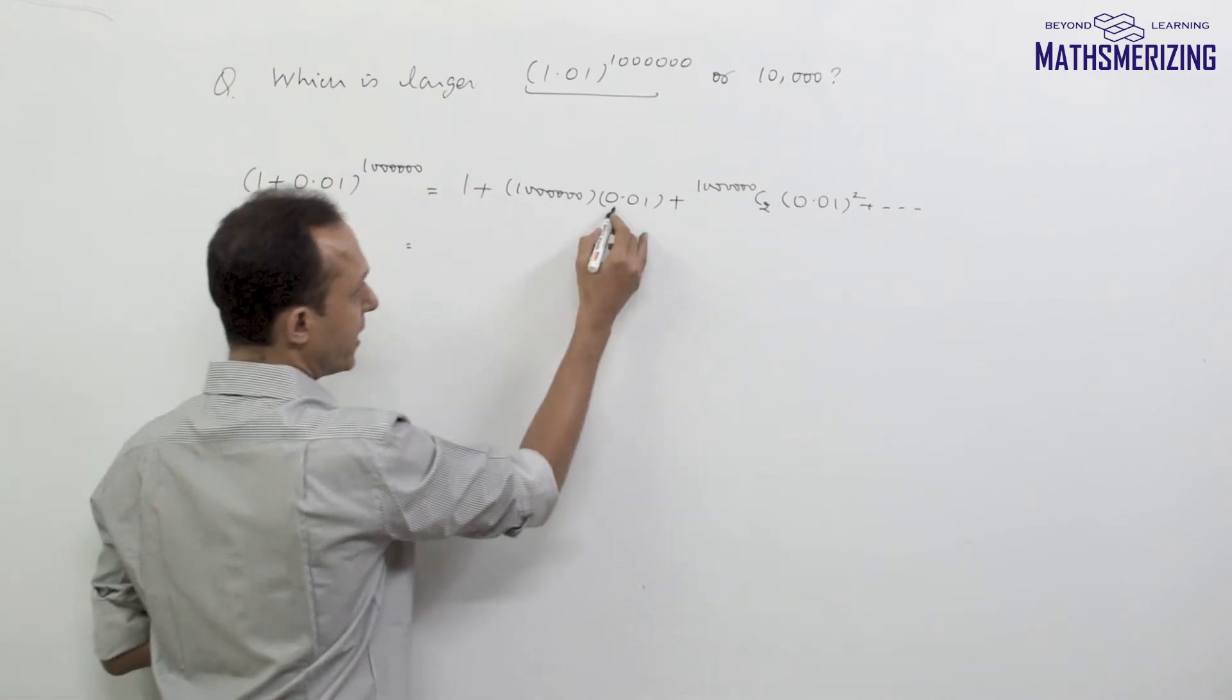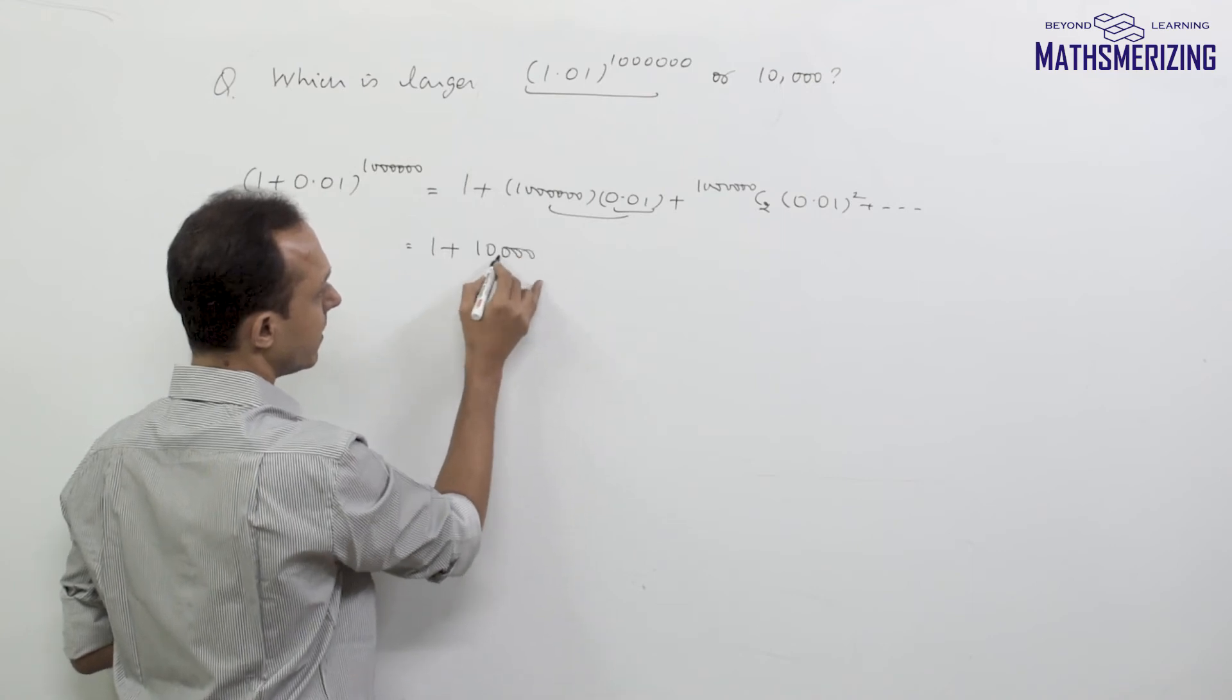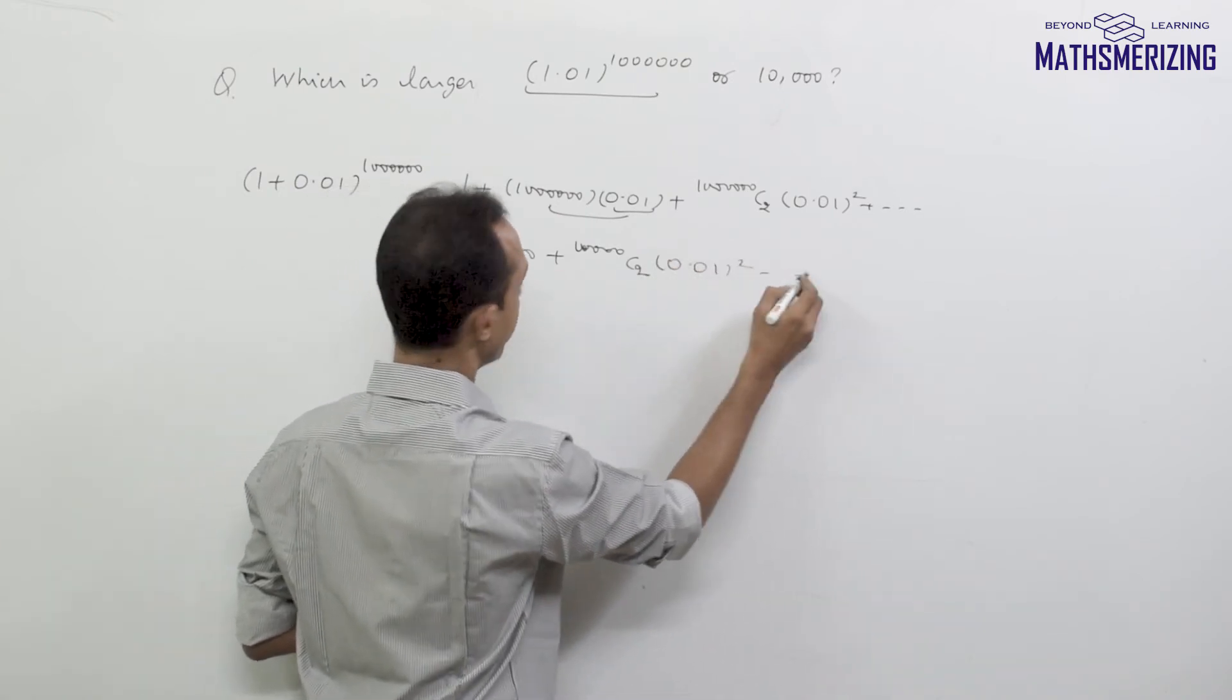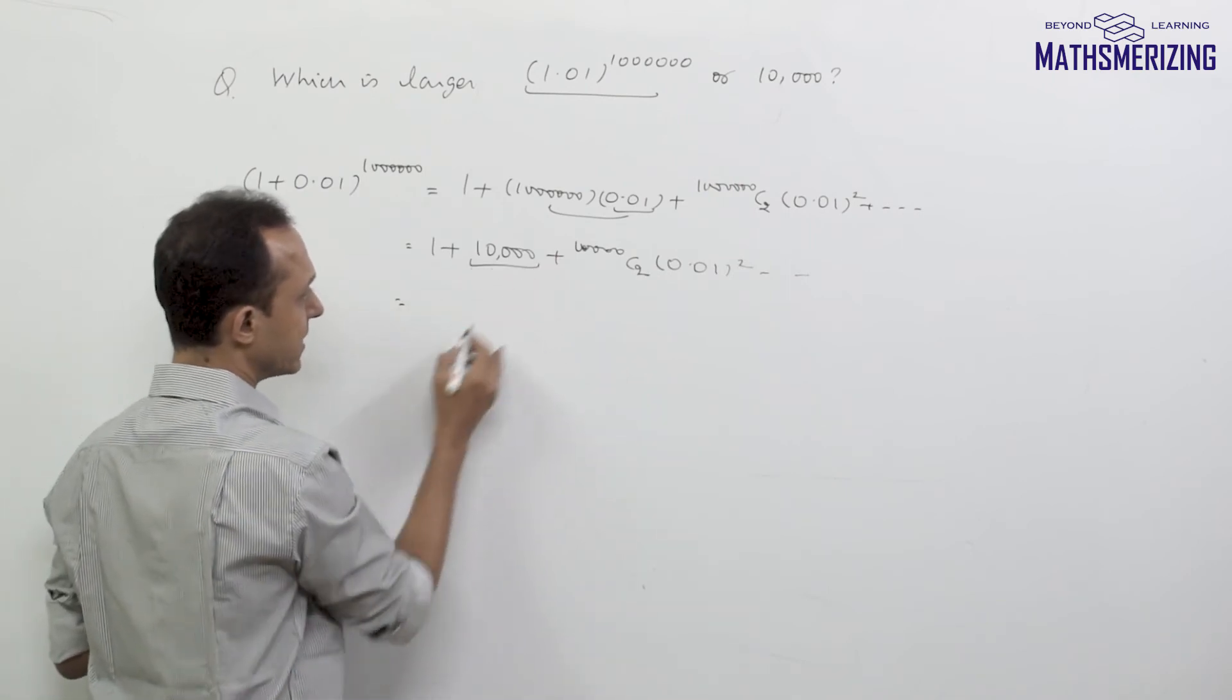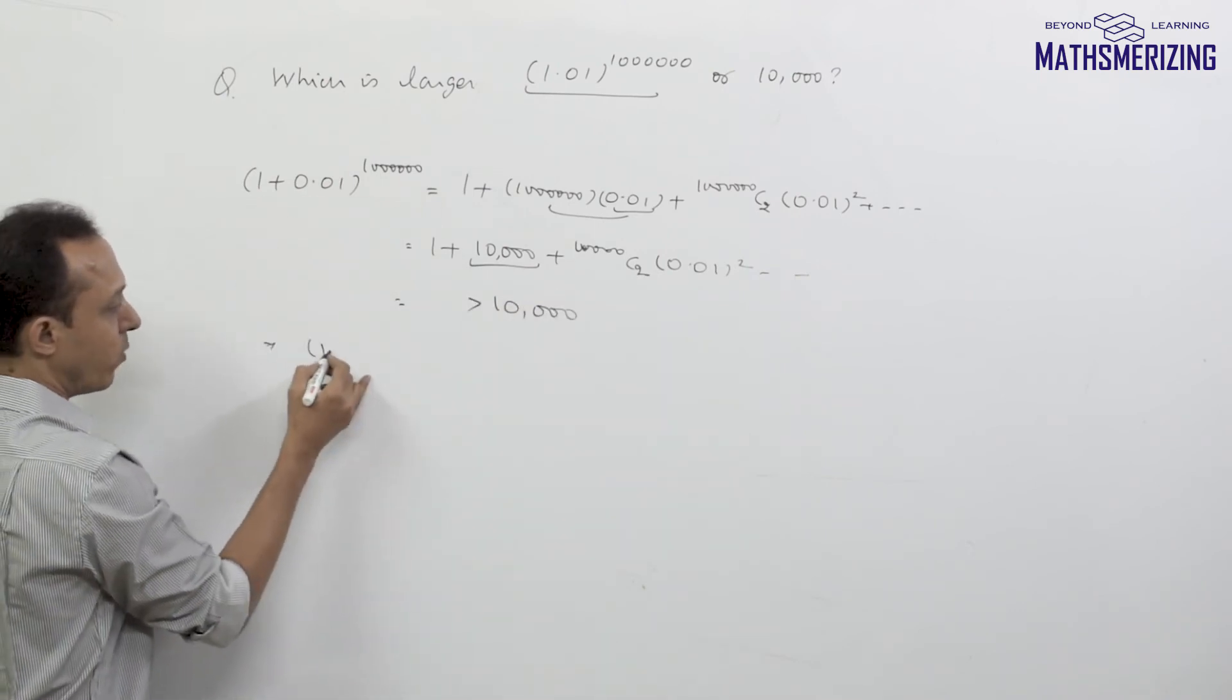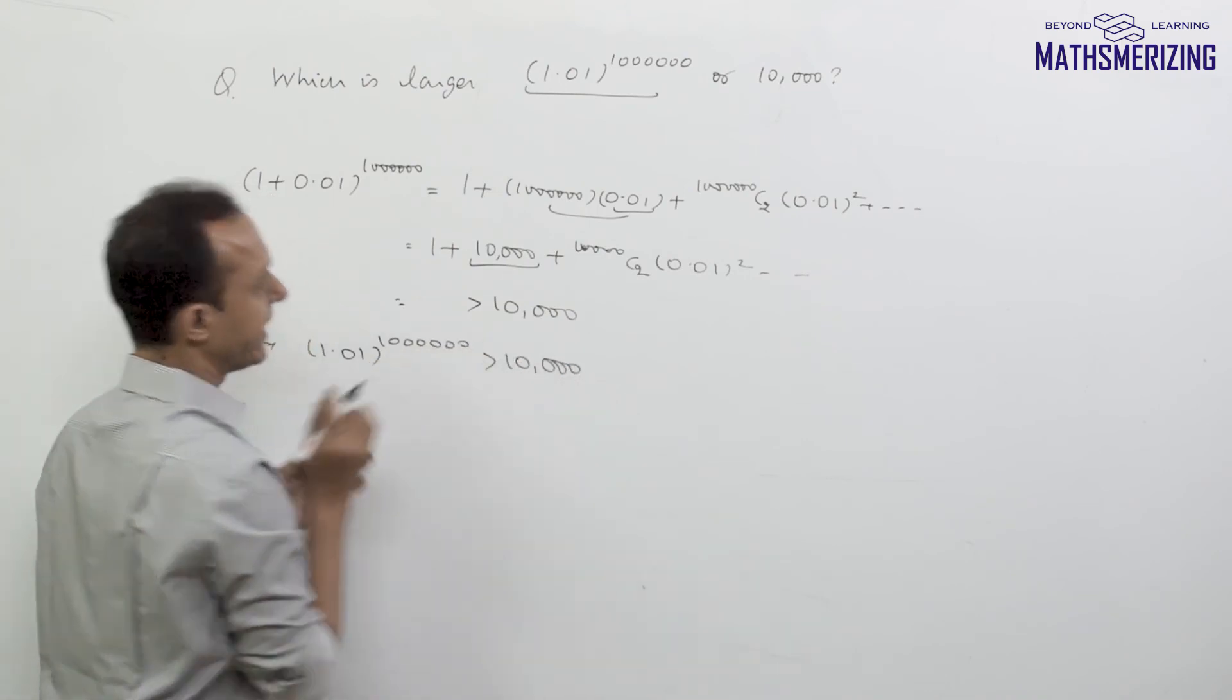If I multiply 0.01 with 1 million, I'll get 1, and then I'm left with 10,000, plus 1 million C2 times 0.01 square. In that case, I'll get a number which is greater than 10,000 because it is 10,000 plus something. So I can directly say 1.01 to the power 1 million is greater than 10,000.